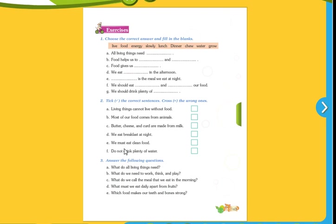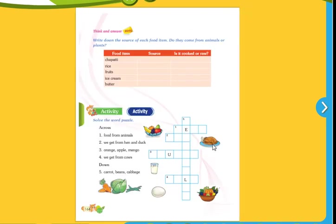So next, come down to the correct answers. Living things cannot live without food - true. Most of the food comes from animals - no, most of the food comes from plants. Butter, cheese, and curd are made up of milk - yes. We eat breakfast at night - no. We must eat clean food - yes. Do not drink plenty of water - no, we should drink plenty of water. So this is the exercise part. Questions and answers we will do in further classes.